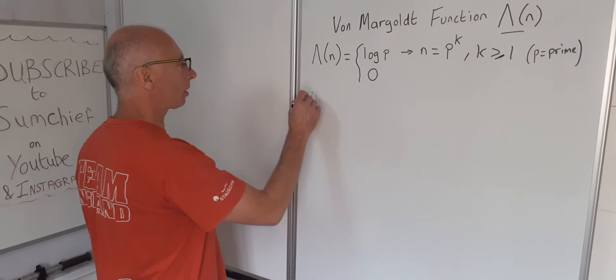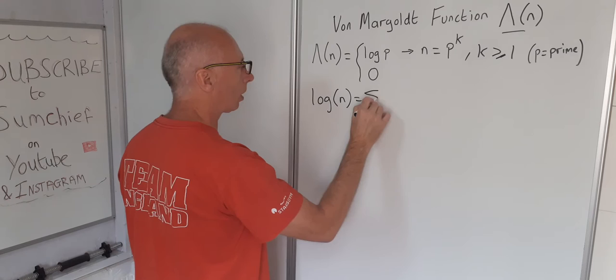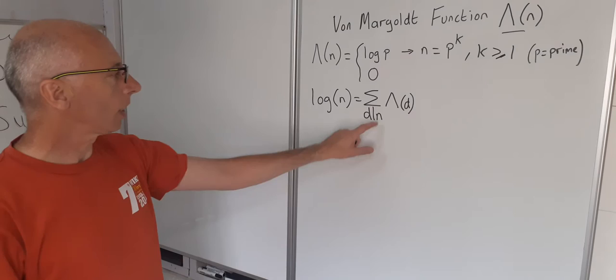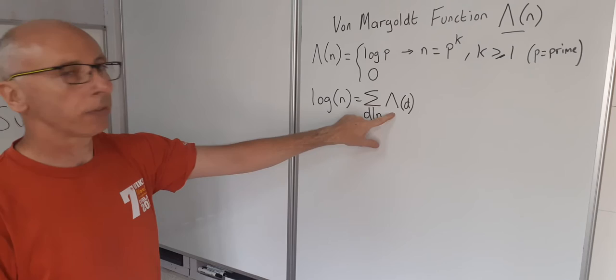So log of n equals the sum of all the divisors of n of the von Mangoldt function for them. So the von Mangoldt of d, where d is the divisors, n is the number we're taking the log of, and this is hopefully going to give us our answer.